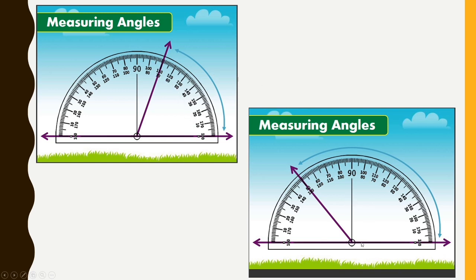In another example, the ray is going towards the right side and 0 degrees is on the inner scale, so we take the inner scale to measure: 0, 10, 20, 30, 40, 50, 60, 70, 80, 90 — and so on. The measure of this angle is 130 degrees.